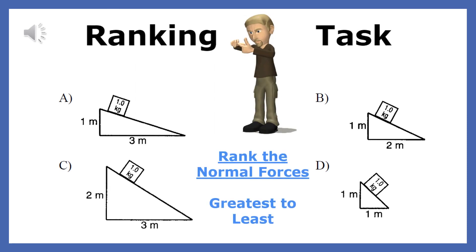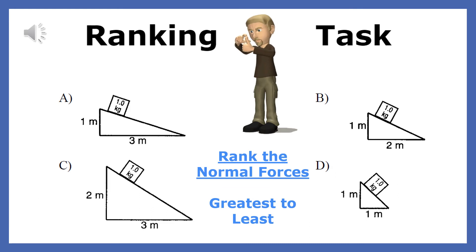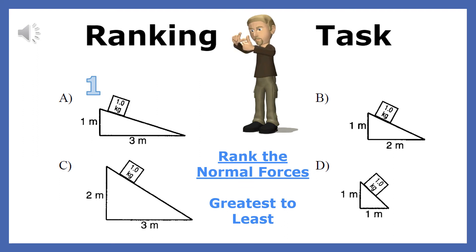A 1 kg box is placed on 4 ramps. Rank the normal force from largest to smallest. The normal force is the ramp's force on the box. The smaller the ramp angle, the harder the box presses on the ramp and the harder the ramp presses on the box. So the largest normal force is ramp A because it has the smallest angle, followed by B, then C, and D which is the steepest ramp.